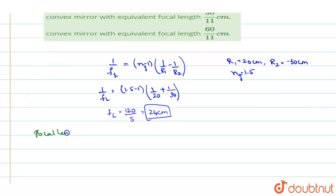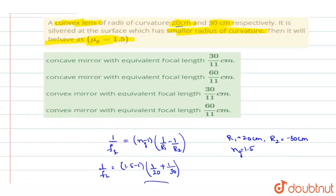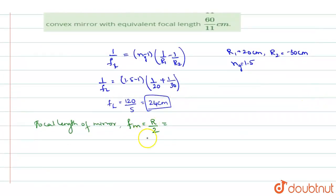So we will find the focal length of mirror now. So when it is silvered, one part acts like a mirror. So focal length of mirror will be. See, focal length of mirror is always half of the radius of curvature. So the smaller radius of curvature means how much it is - it is 20 cm, right? So we will take it as minus 20 because one side is silvered. So the other side becomes minus 20 divided by 2, which becomes minus 10 cm. So focal length of the mirror comes out to be minus 10 cm.